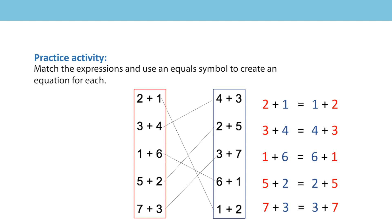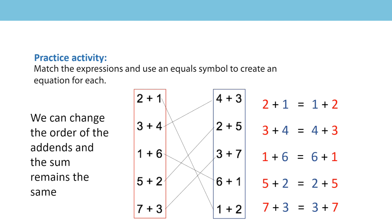In fact, I hope you spotted that you didn't need to do any adding up at all in this exercise. Because all you needed to look for were the expressions that had the same addends in them. Two and one, and one and two — they both have a one and two. Three and four, and four and three — they both have a four and three. Because we know that we can change the order of the addends and the sum remains the same.